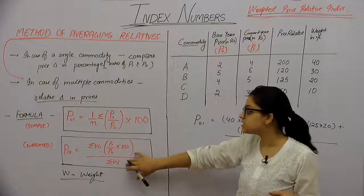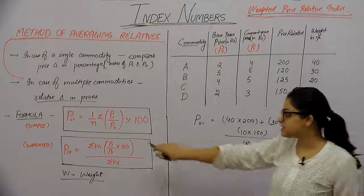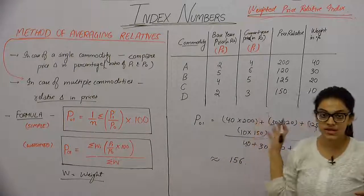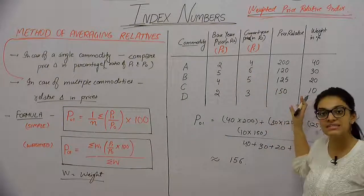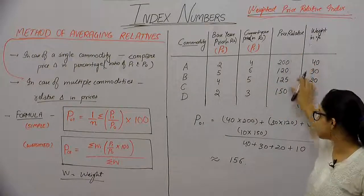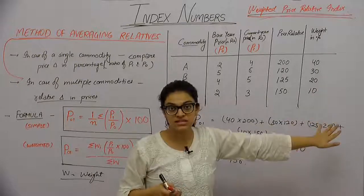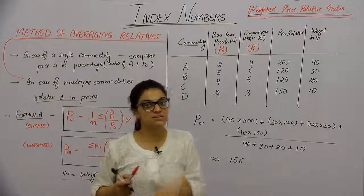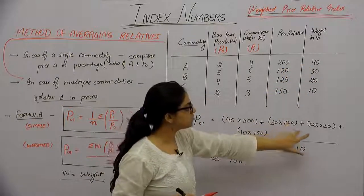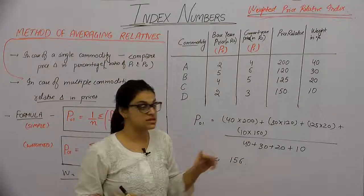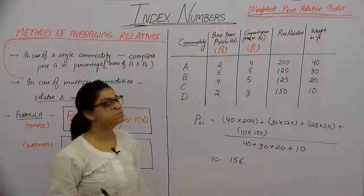Once we have the weights, similar to the simple method, we find the price relative: P1 upon P0 into 100 — divide the current year price by the base year price and multiply by 100 — for each commodity. Then we have a column of price relatives and a column of weights. We multiply each price relative by its weight — for example, 200 × 40, 120 × 30, and so on — then divide by the total submission of weights to get the weighted price relative index.